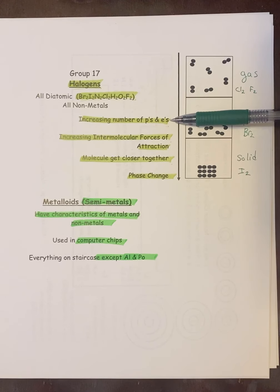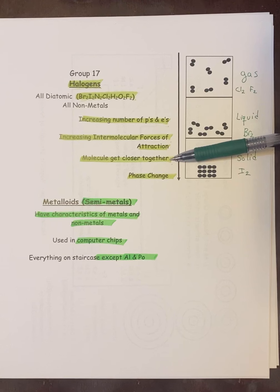But the thing you need to really know about them is as you go down the group, you increase the number of protons and electrons. You increase the strength of the intermolecular forces. It causes the molecules to attract harder. Therefore, they get closer together, and it eventually causes phase change. And that's why these two are gases, this one's a liquid, and this one's a solid, because the intermolecular forces get stronger, the molecules attract and get closer, and eventually it causes them to change their phase. That is something you definitely have to know.